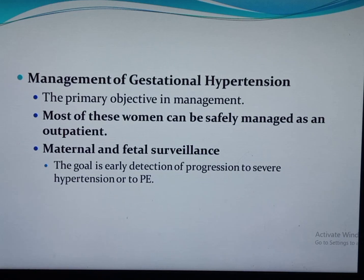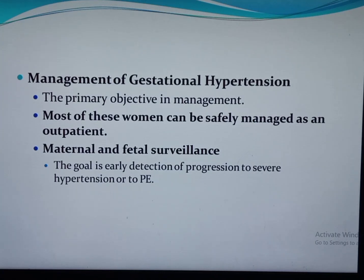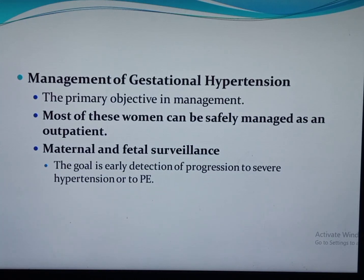The primary objectives in the management of gestational hypertension are the safety of the mother, followed by delivery of a mature neonate not requiring prolonged intensive hospital stay. Most women can safely be managed as outpatients in daycare or at home. Maternal and fetal surveillance is the backbone of management, aiming for early detection of progression to severe hypertension or preeclampsia. Surveillance includes evaluation for signs and symptoms of preeclampsia, weekly or twice-weekly blood pressure measurement, and laboratory tests including CBC with platelet count, renal function, and liver enzymes at each visit. Fetal kick count daily and biophysical profile or non-stress test twice weekly are also performed.